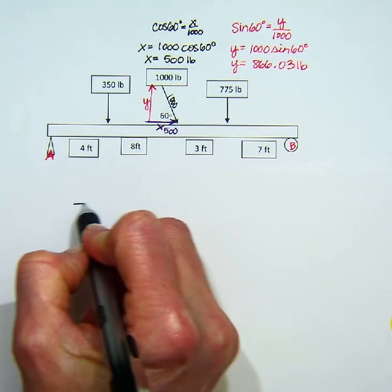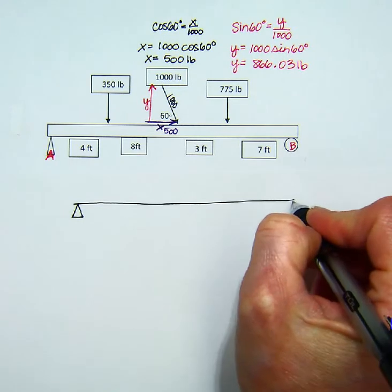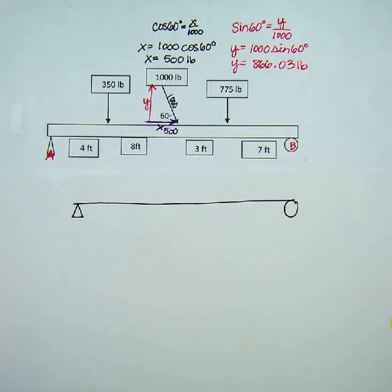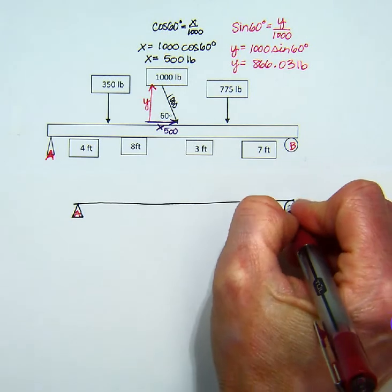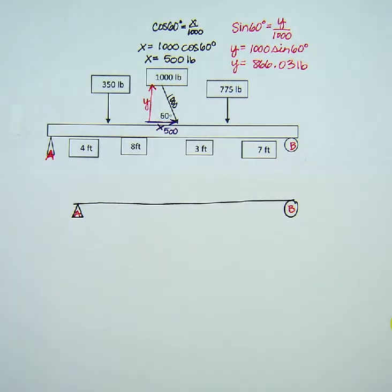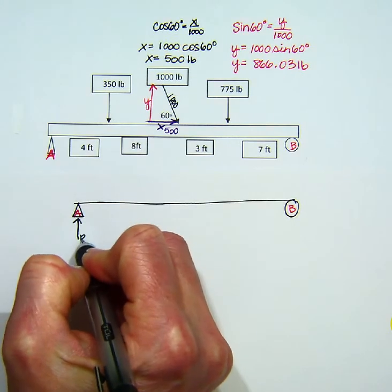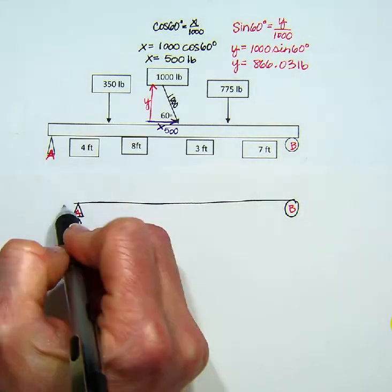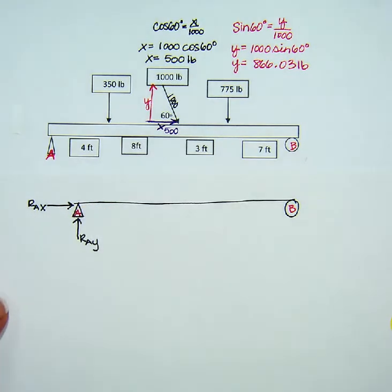So now I'm going to draw my free body diagram. There's my pin. There's my roller. I'm still going to label my pin A, and I'm going to do a better job this time, and my roller B. And then I'm going to put my forces on here. I'm going to have a reaction force at A in the y direction and a reaction force at A in the x direction, because it is a pin.